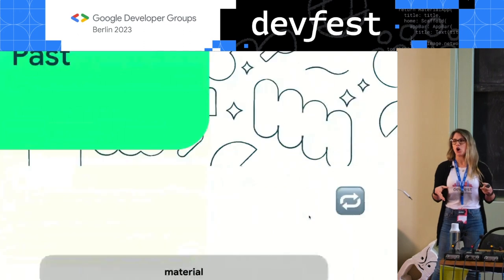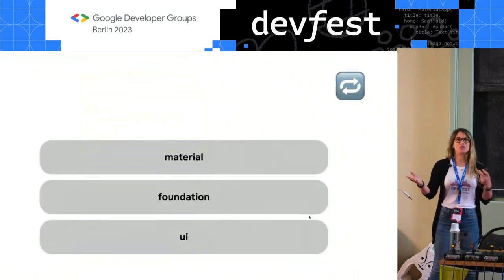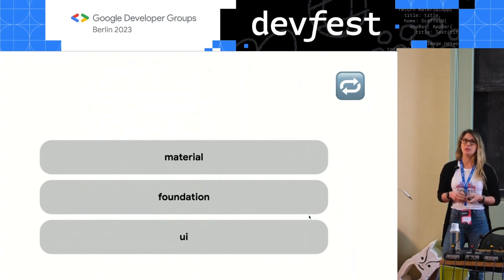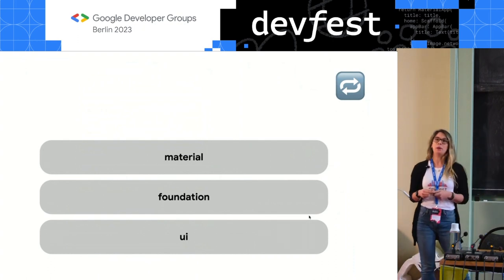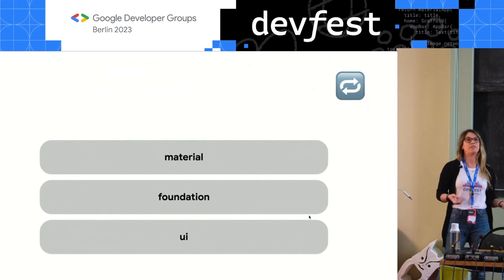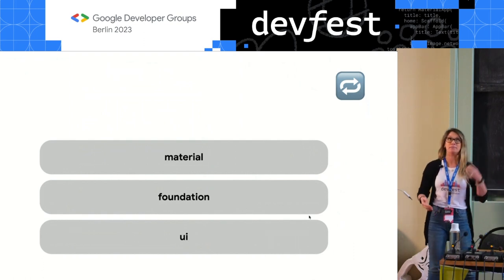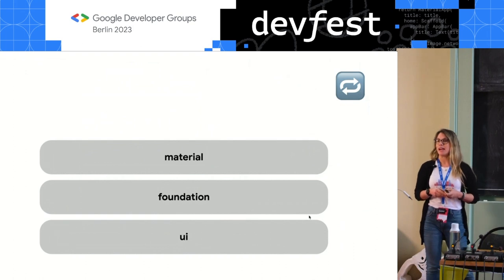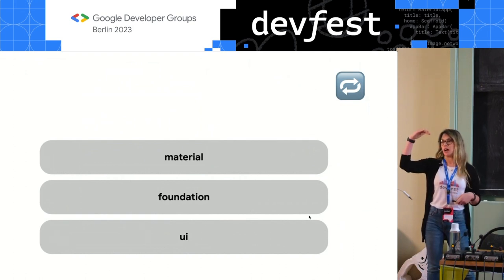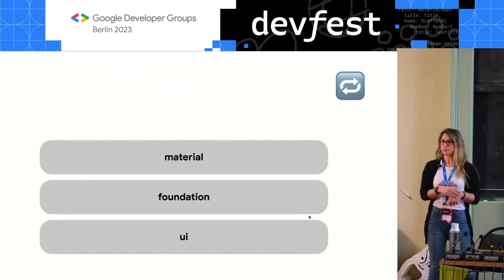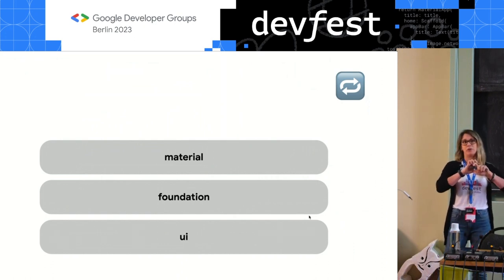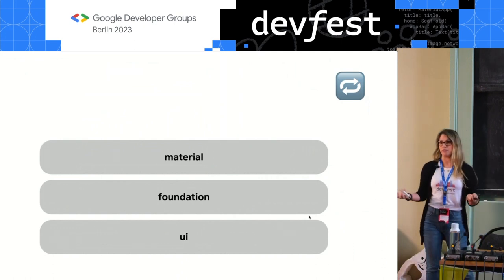Very quickly on Compose, in case you're not too familiar with it, these are newish libraries or a set of libraries to build UI in Android. It's not a single library, it's a collection of libraries. And in particular, in the UI case, it's built in layers. So first we have material, foundation, and UI layer. And in material, it's just really a styling layer on top of foundation.